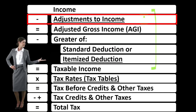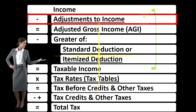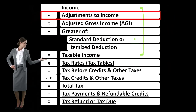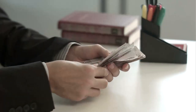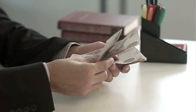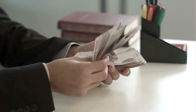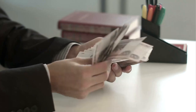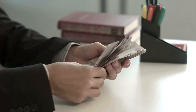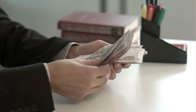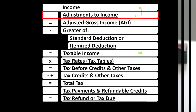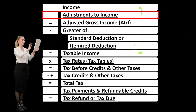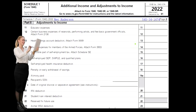Remember, the adjustments to income do not have the kind of threshold we have to clear — like a standard deduction — before they start to benefit us, as with the itemized deduction. So if we qualify for the adjustments to income, we can typically take that adjustment, although they are somewhat more limited than the itemized deductions.